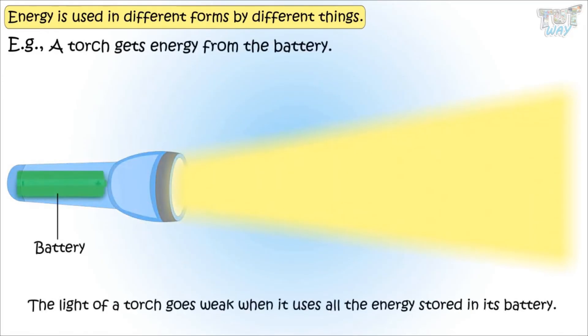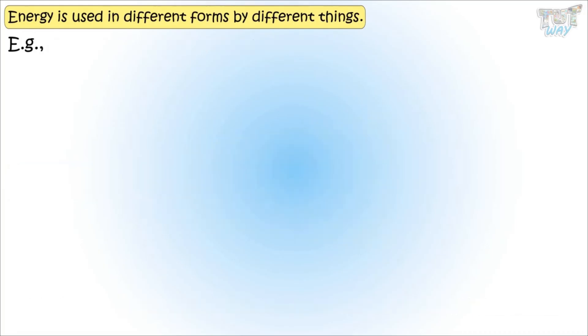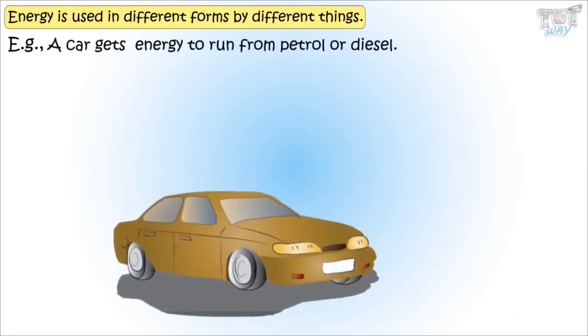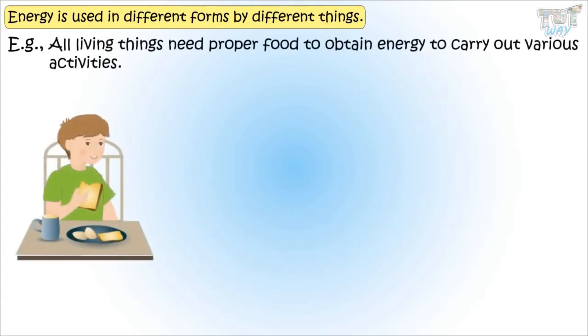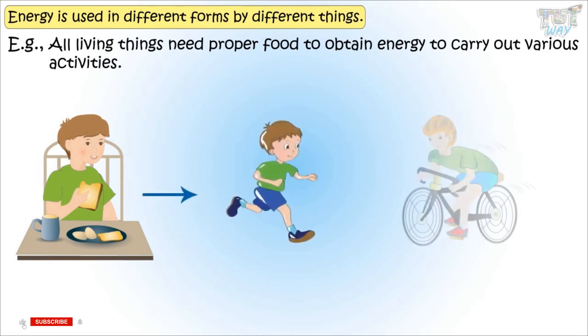Why the light of a torch goes weak when it uses all the energy stored in its battery? A car gets energy to run from petrol, or diesel. A car has to be filled with petrol if it has to run. All living things need proper food to obtain energy, to carry out various activities.